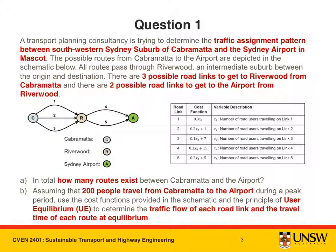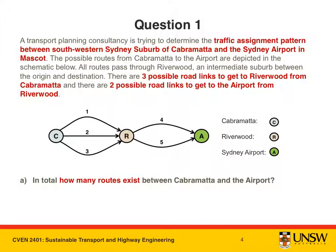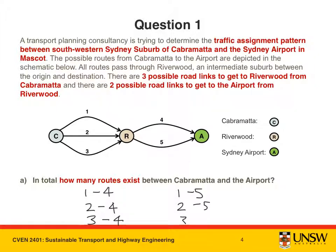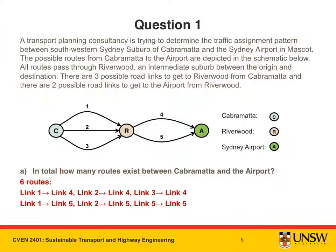Having extracted the key information, let's take a closer look at Part A. There are many ways to get from Cabramatta to the airport. One route would be to take link 1 and then link 4. Similarly, users could use link 2 and link 4, as well as link 3 and link 4. Alternatively, users could use link 5 to travel from Riverwood to the airport, giving a further three possible routes: link 1 then link 5, link 2 and then link 5, and finally link 3 and then link 5. In total, six routes exist between Cabramatta and the airport.